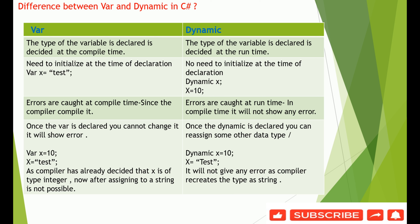In this video we'll discuss the difference between var and dynamic in C#. var is a type of variable where the compiler decides the data type at compile time. The data type is defined at initialization time — for example, var x = "test" will be considered as string type.